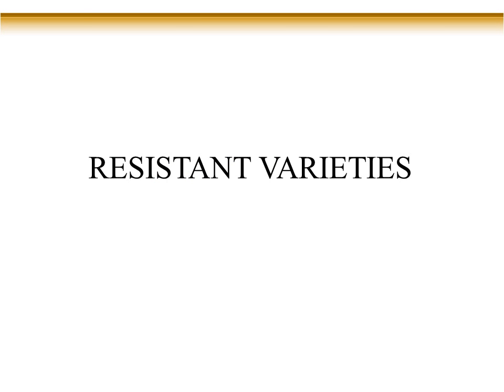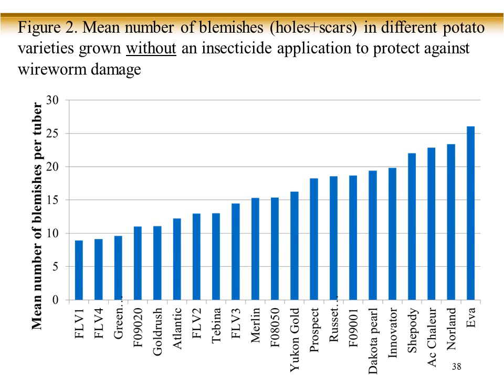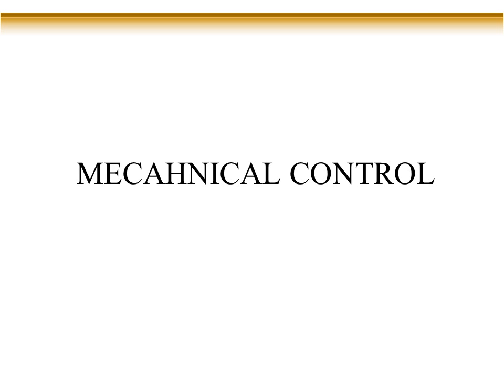For resistant varieties, we tested 20 different potato varieties. Russet Burbank, one of the commonly used varieties, has quite a lot of wireworm damage on it.